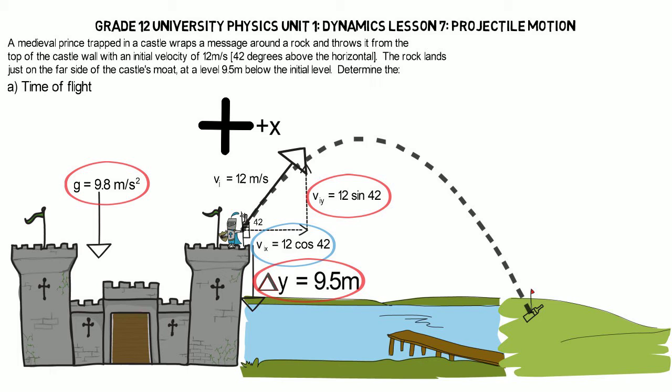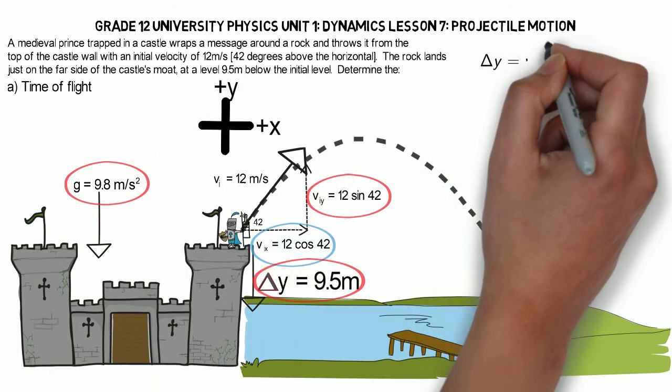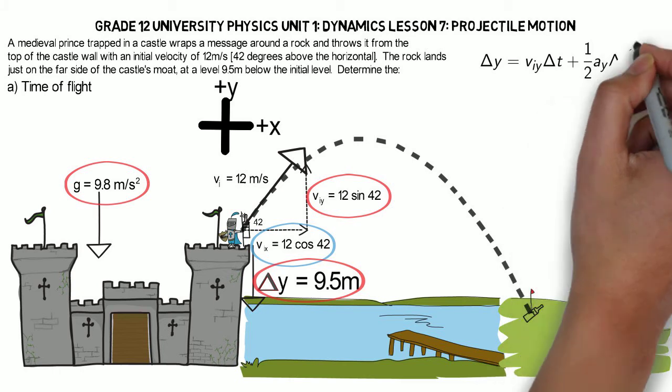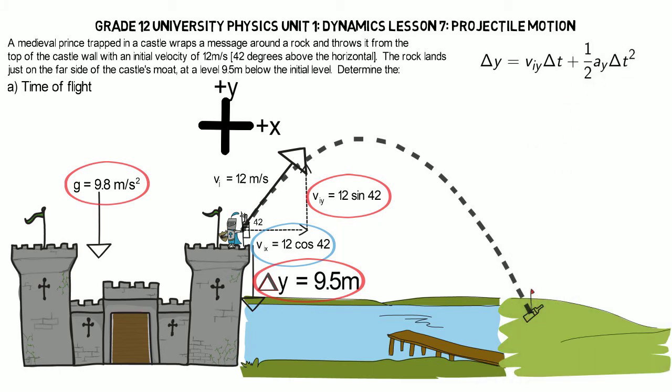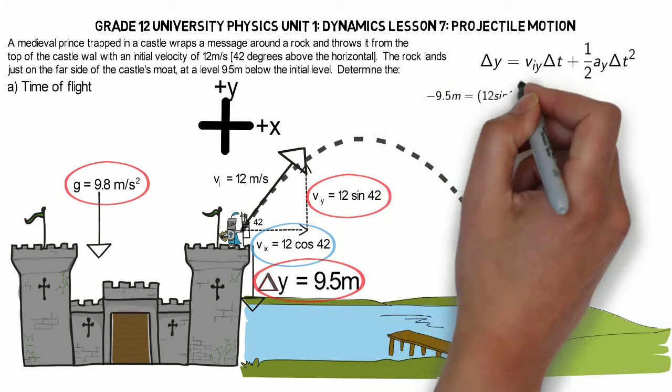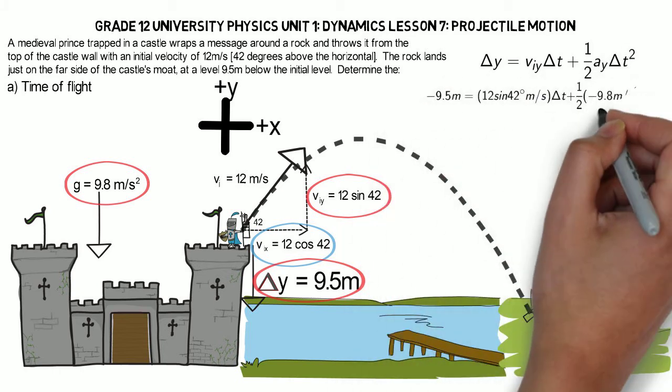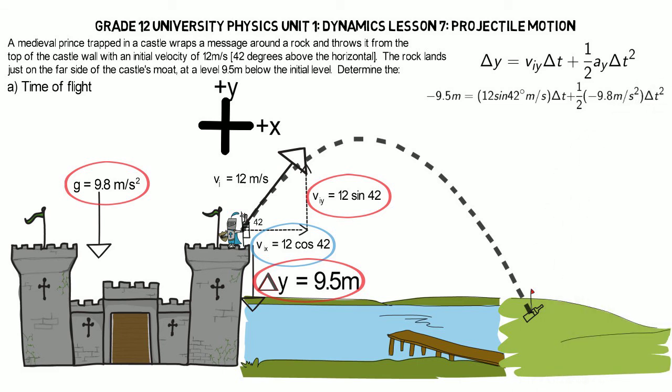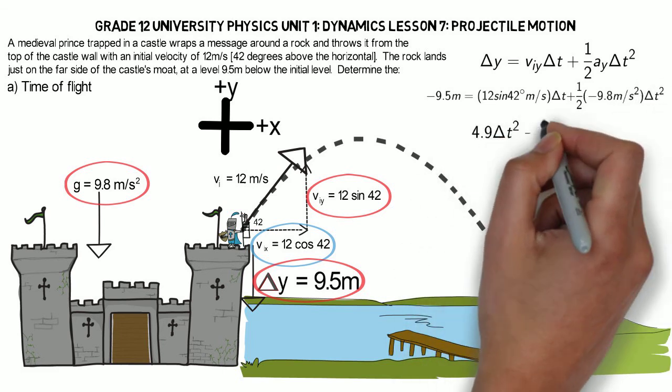So let's label our up direction to be positive, and we'll use these three pieces of information to plug into one of our equations of uniform acceleration. Making sure that both gravity and displacement in Y are negative, we can get the following equation.